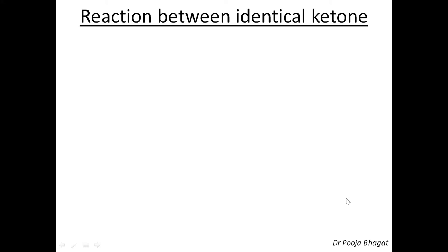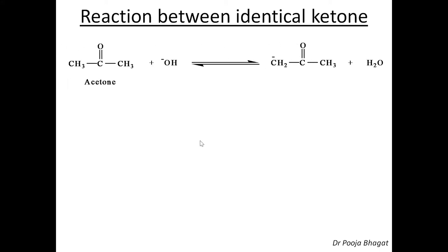Now take the reaction between identical ketones. When two of the same ketone molecules react — for example, acetone — one molecule of acetone first has the alpha hydrogen abstracted by the base. Both carbons adjacent to the carbonyl are alpha carbons, so these hydrogens are the alpha hydrogens. You can remove either of the hydrogens by the base.